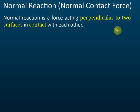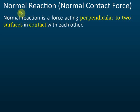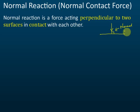Tension is a pulling force, while normal reaction is a pushing force — the force pushed on a surface perpendicular to it. The word 'normal' here means at right angles, that is 90 degrees. So if we have a surface and a force acting at 90 degrees to it, that is called the normal reaction.